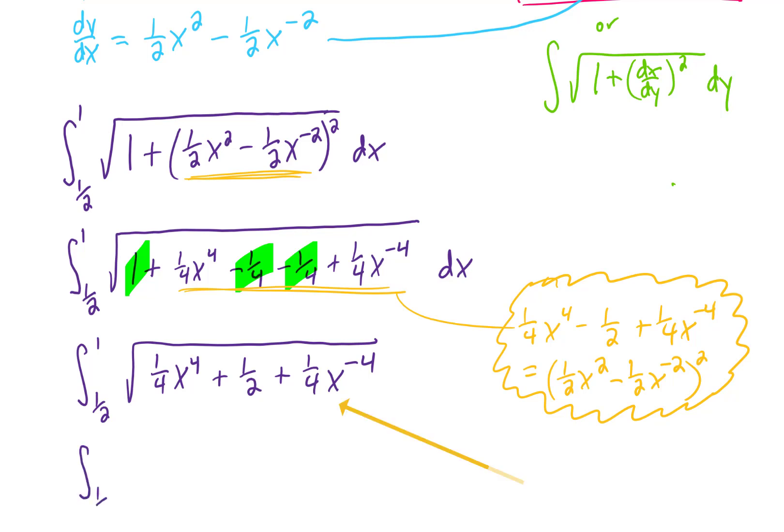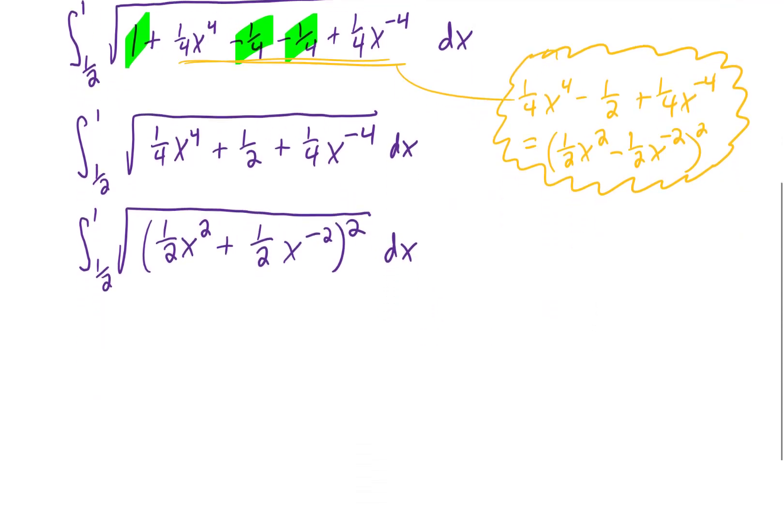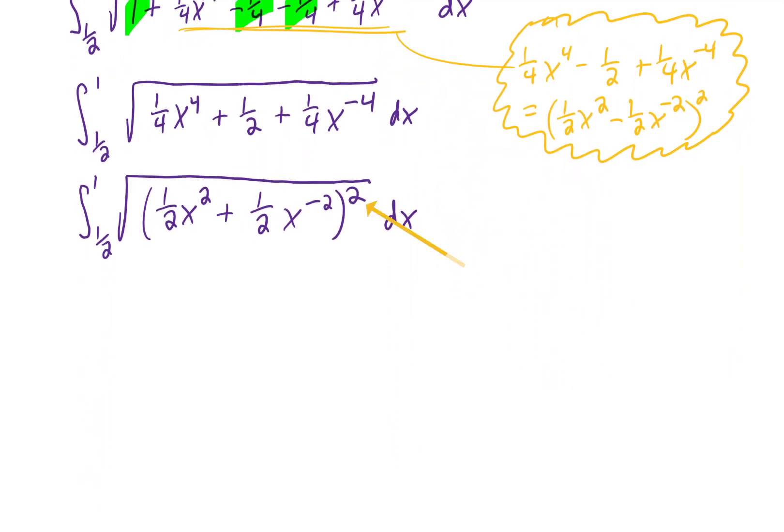That should maybe tip us off if we look back at our integrand that these three terms can be rewritten in this form. The reason that's very convenient in this case is because this square can now cancel with this square root. And what we're left with is actually a relatively simple integral to complete.